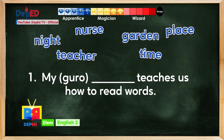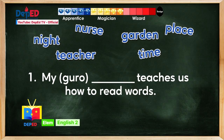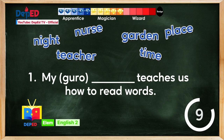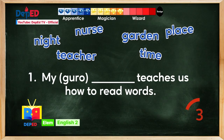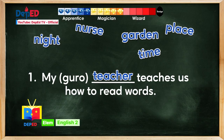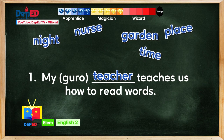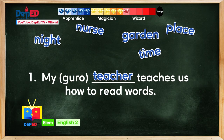First sentence: My blank teaches us how to read words. What do you think is the correct translation of the word in parenthesis? Time is up — what is your answer? Very good, the answer is teacher! One gem for you. Let us read the completed sentence — repeat after me: My teacher teaches us how to read words.